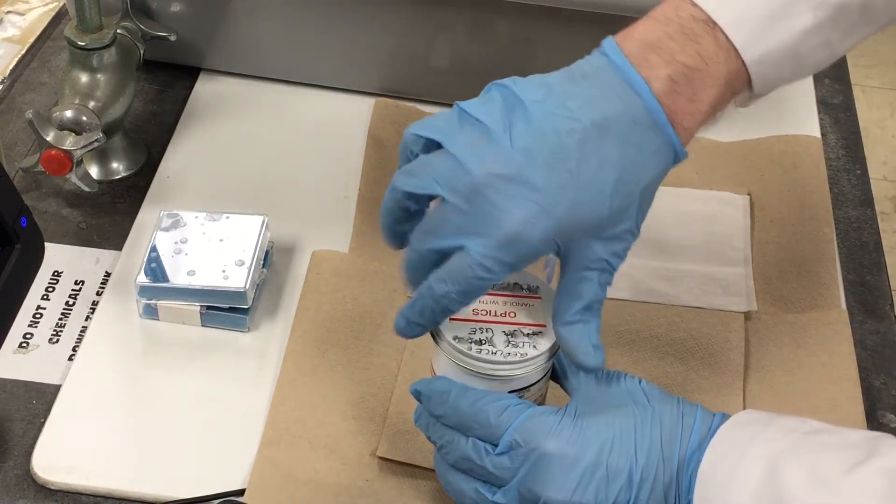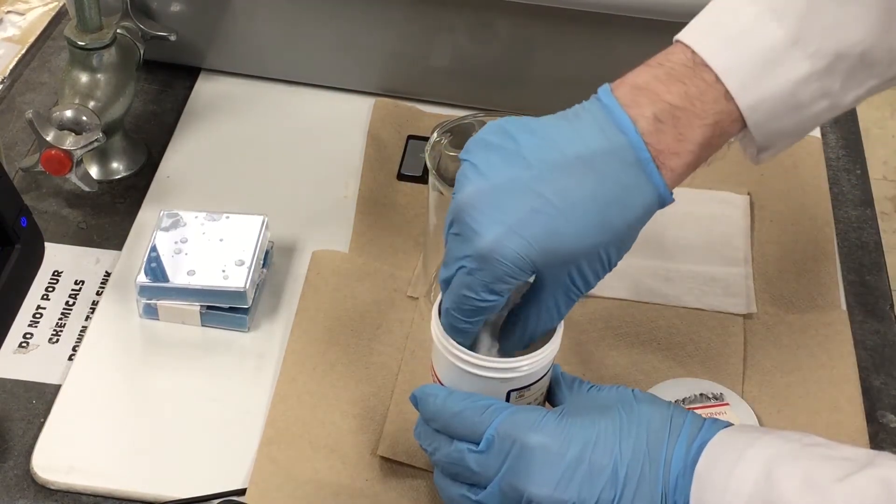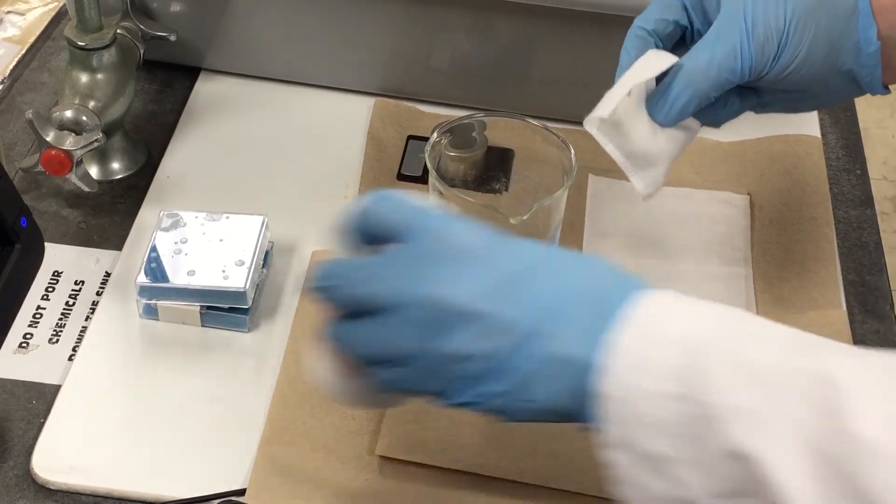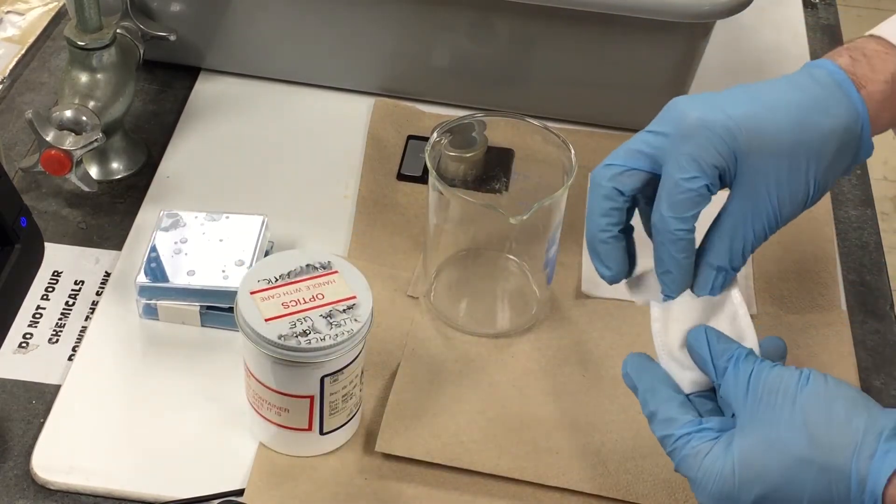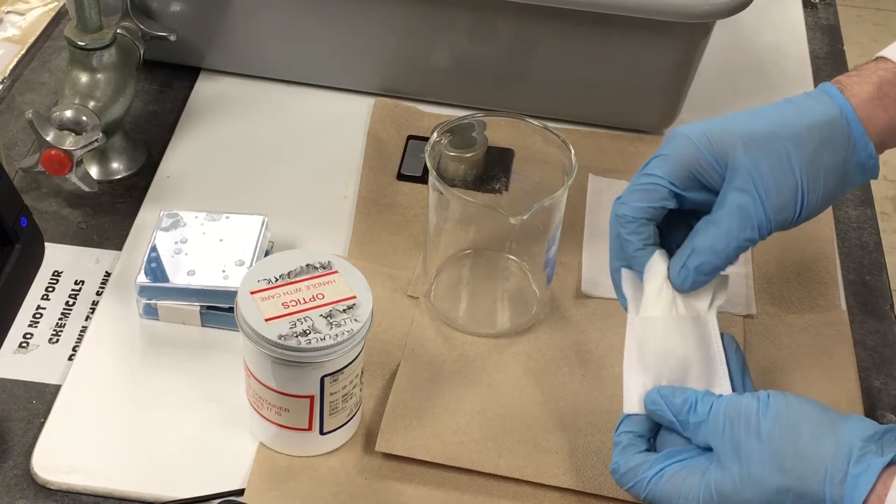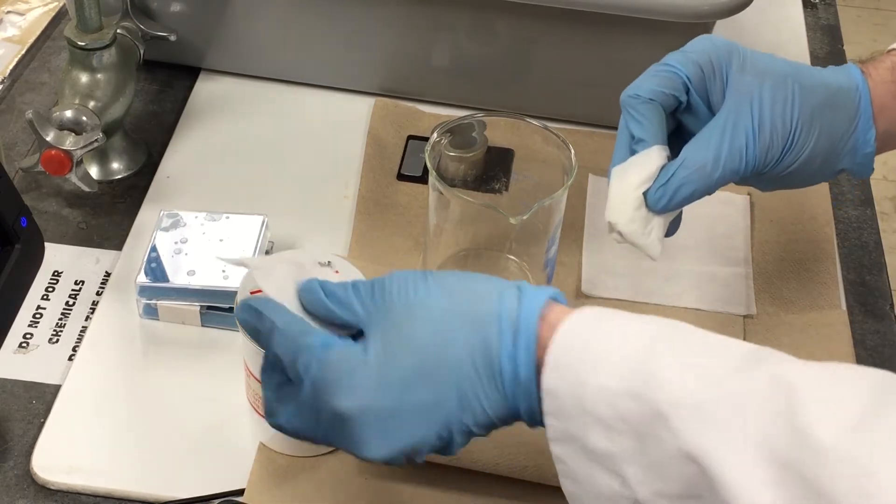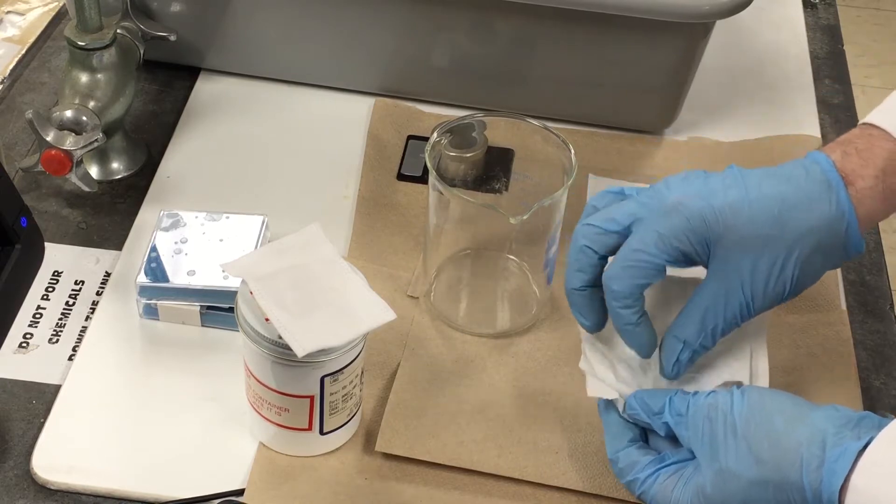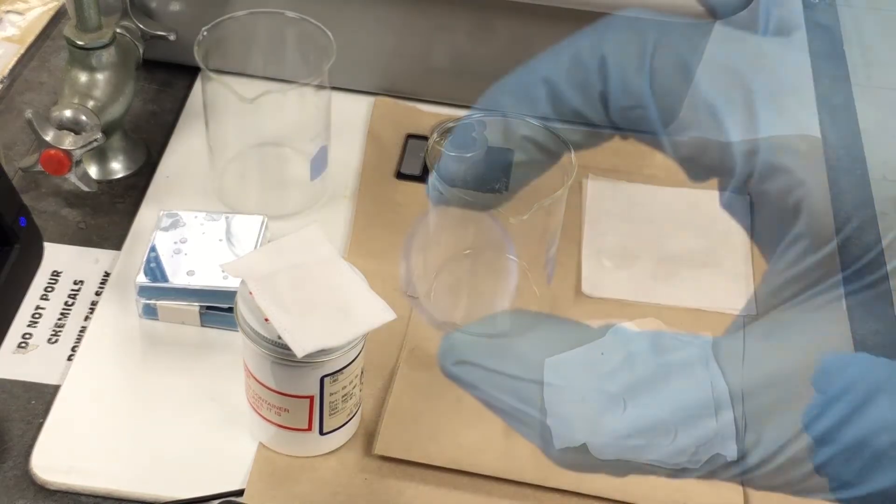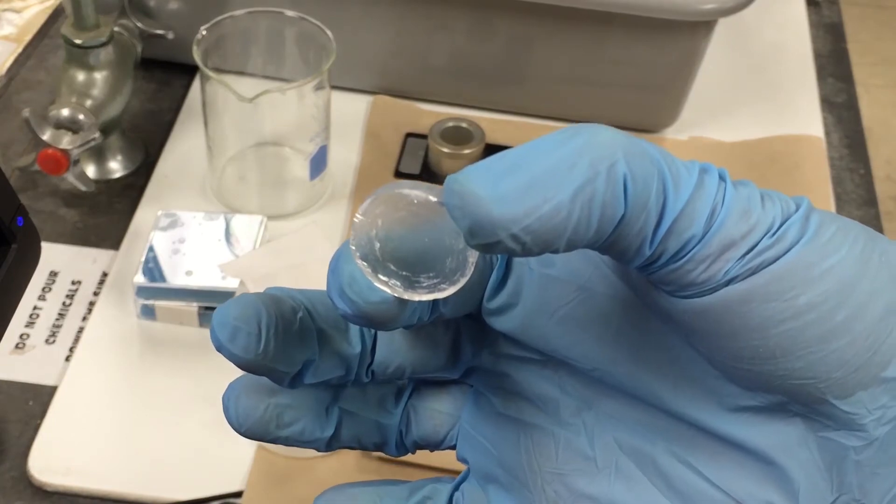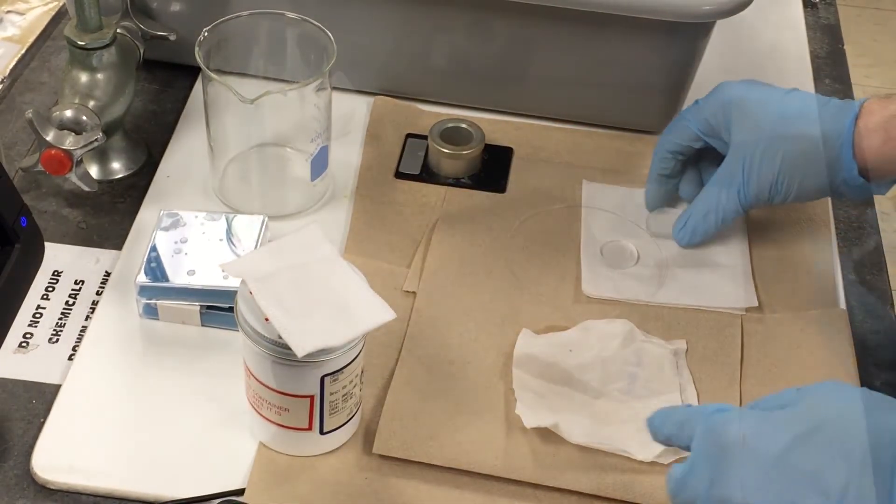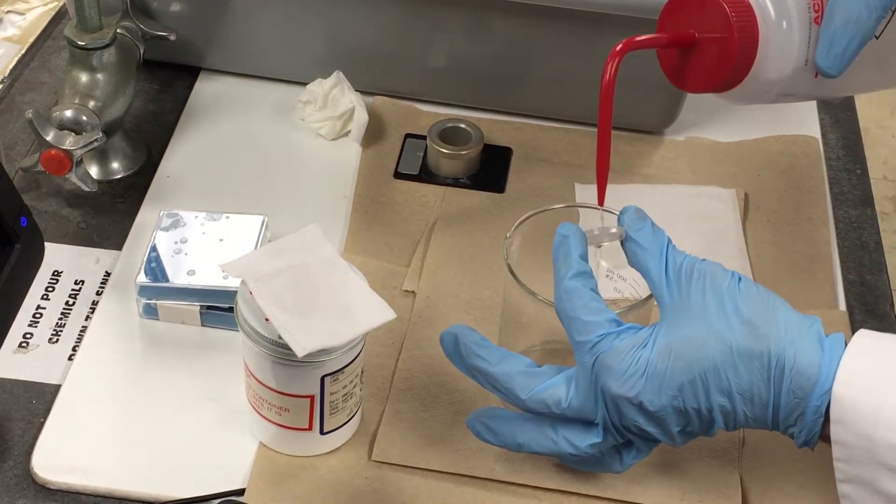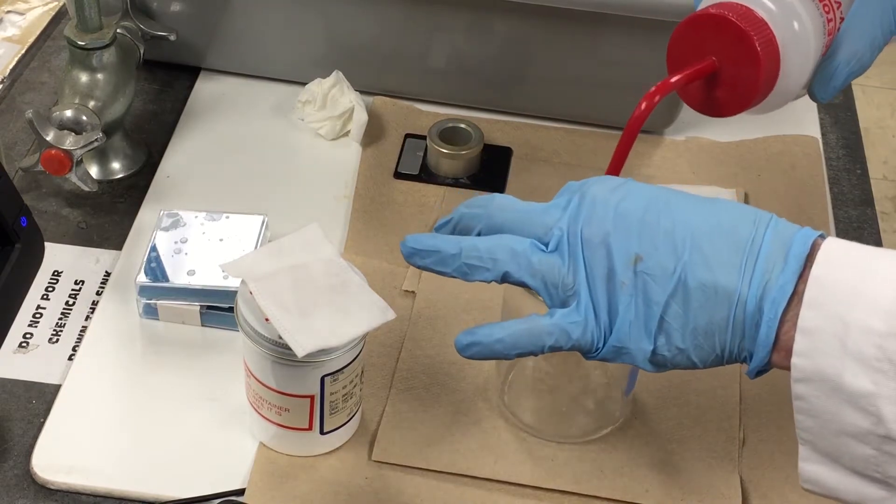Start by removing the plates carefully. Try to handle them by their edges. Rinse both sides of each cell with acetone and let dry.